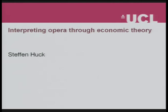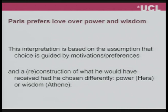Essentially two things we need to do. One thing is we have to make an assumption — we have to make the assumption that Paris's choice is guided by his motivations, or as economists would say, by his preferences. So he doesn't choose Aphrodite because she's first in the alphabet. He chooses her because it's an expression of his motivations.